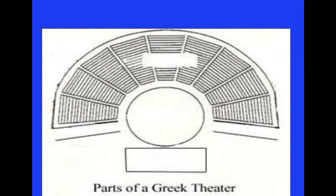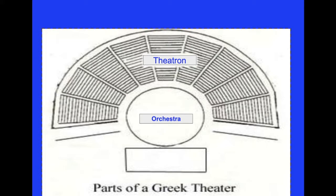Now we're looking at a picture of a Greek theater. Remember, this is an amphitheater — you're outdoors. The audience sits in the theatron; now we would call it the house. Then we have the orchestra, the dancing place, where the majority of the performance would happen — we would just call it the stage. Today we also have an orchestra pit, but that is a different part of the stage. For the Greeks, the dancing space and main acting space is the orchestra.